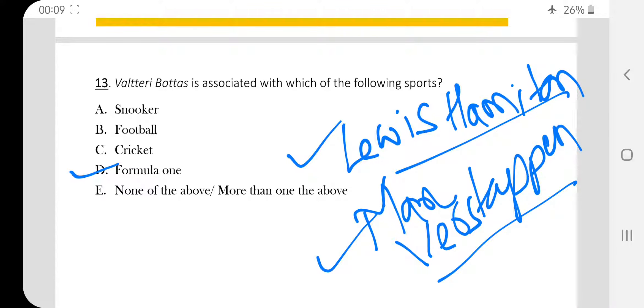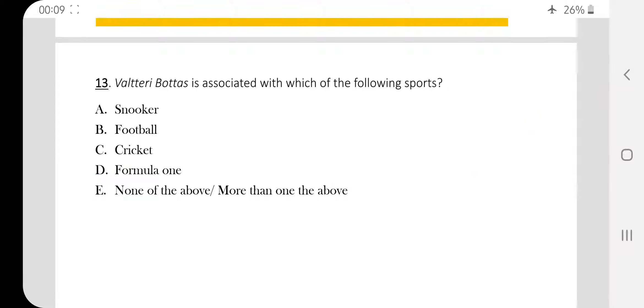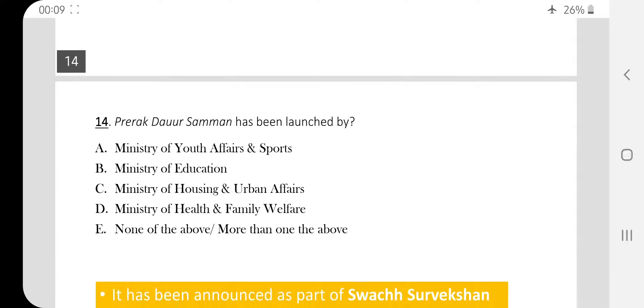For important games and sports, you should know the names of two to four important players. This can be asked, that this person is associated with which field.